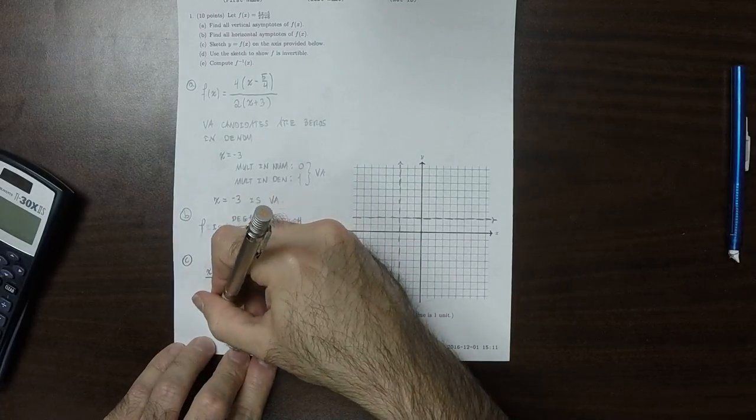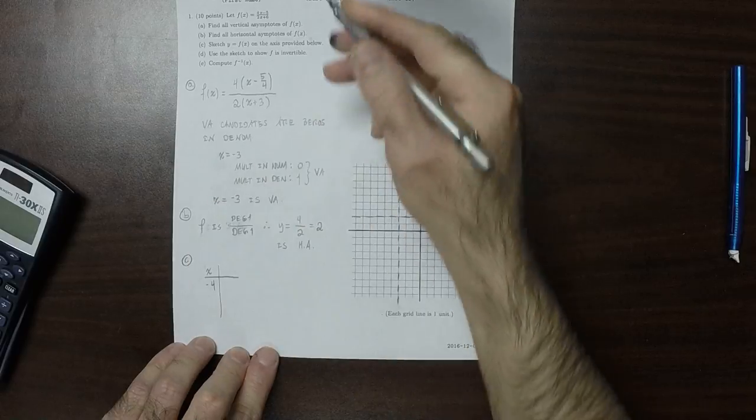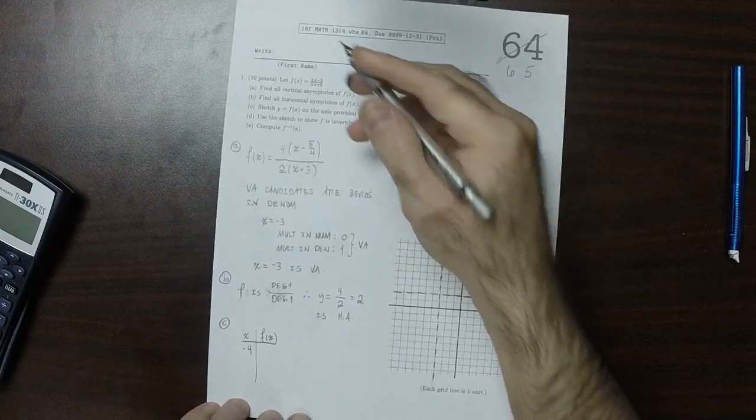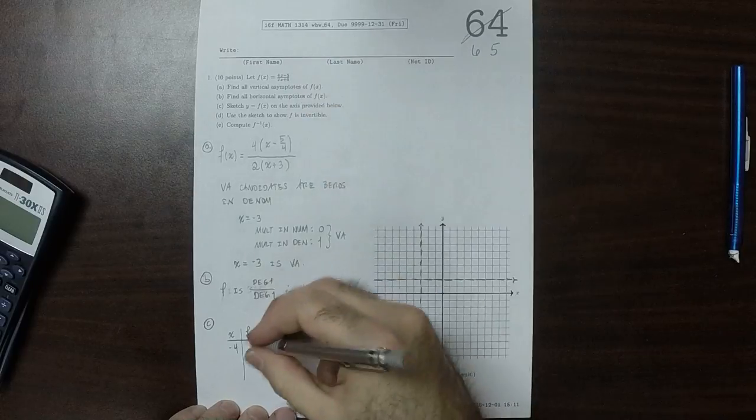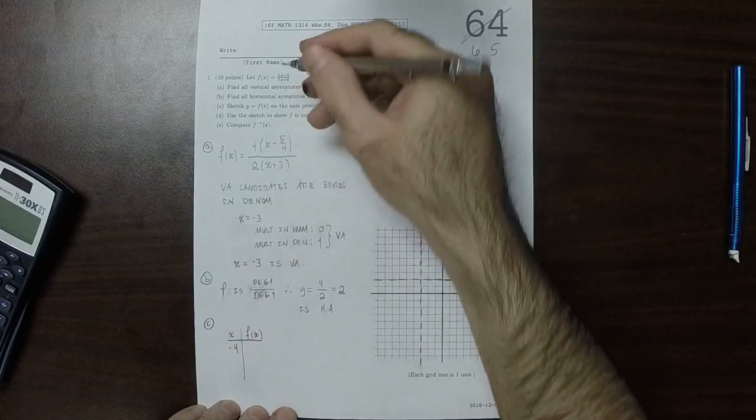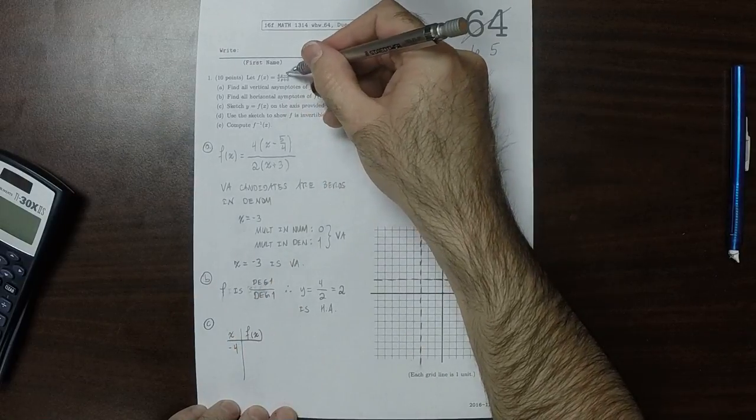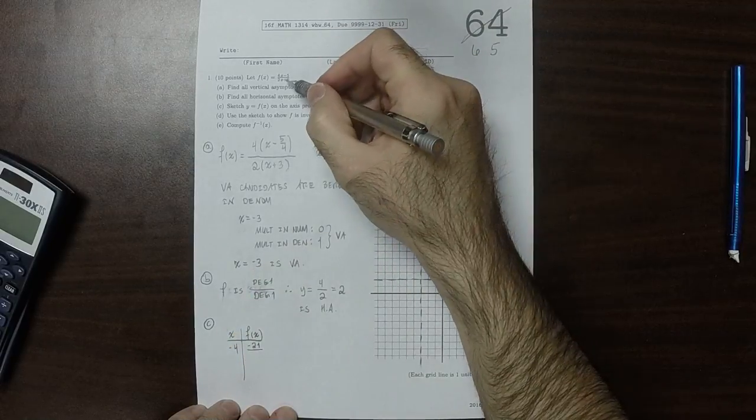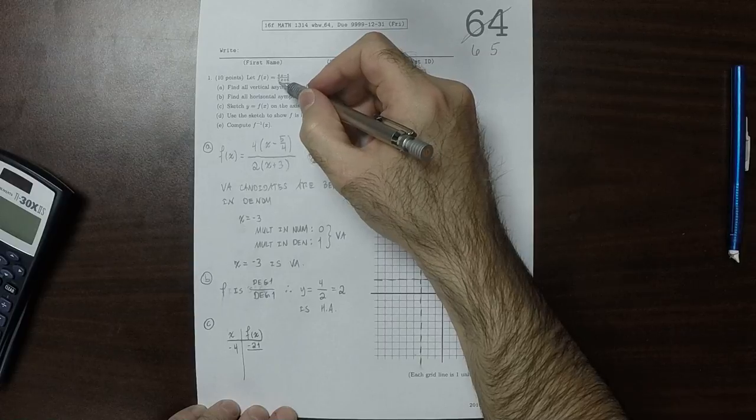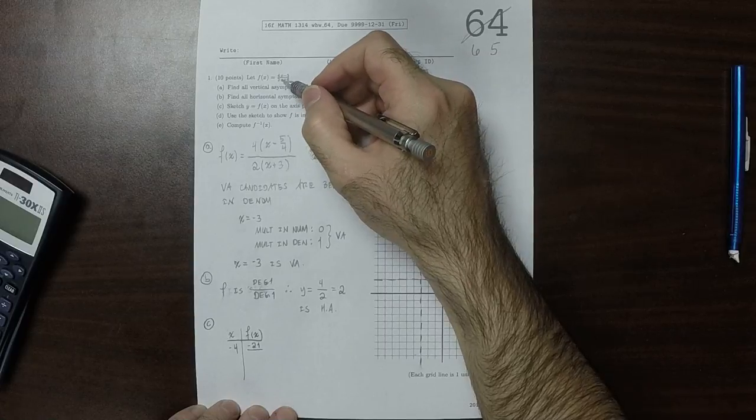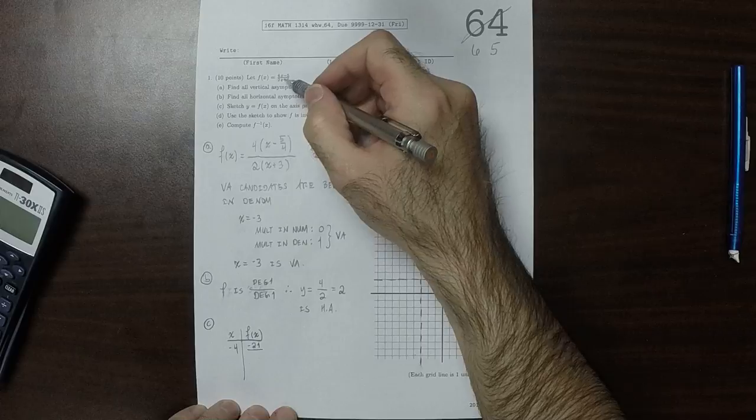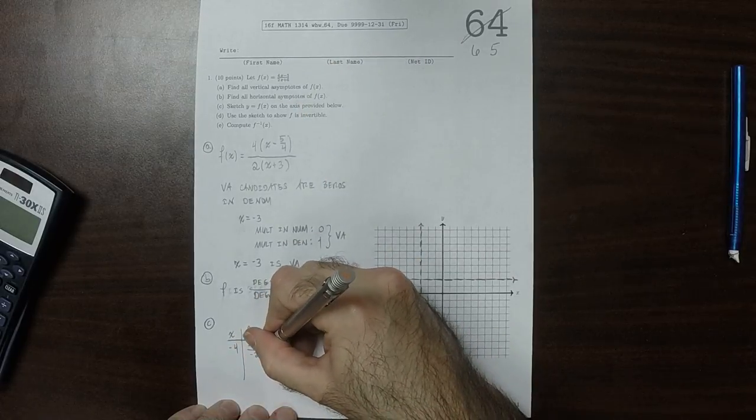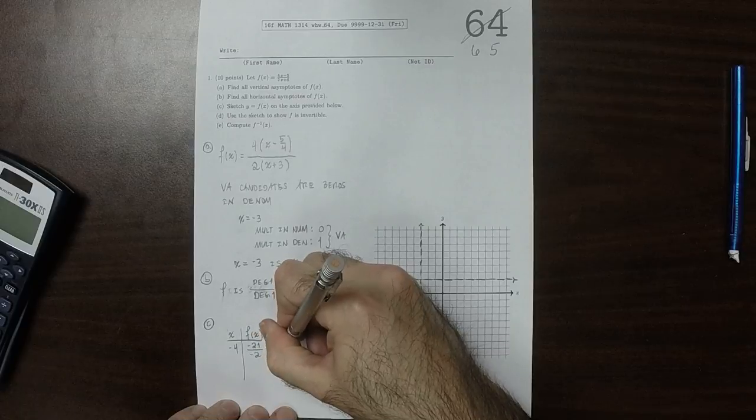How about when X is negative 4? When X is negative 4, plug in negative 4, that would be negative 16 minus 5, so that'd be negative 21. And then divide by negative 8 plus 6 is negative 2. So that would be 10.5.